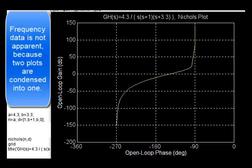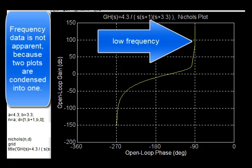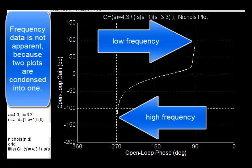Frequency data is not apparent because two plots are condensed into one. Low frequency occurs at the top and high frequency toward the bottom.